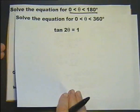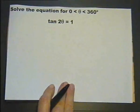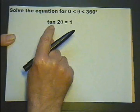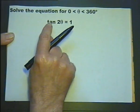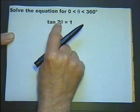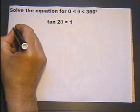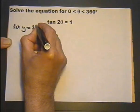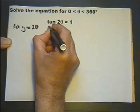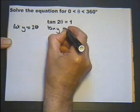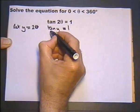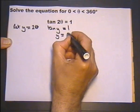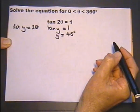Let's solve another equation — this time within the range of 0 to 360. Again, we want to simplify the equation by just making it tan of any letter equals 1. So we're going to do a substitution: we're going to let y equal 2 theta. So the equation becomes tan of y equals 1.